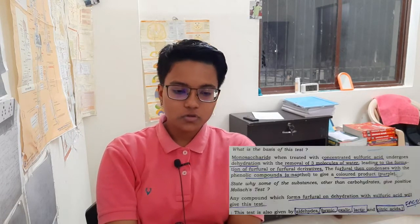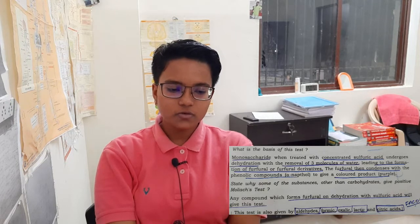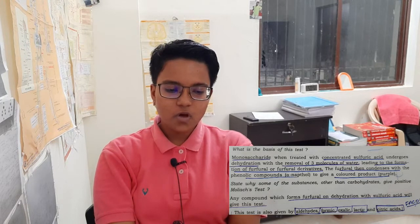Our first question is: what is the basis of the Molisch test? Monosaccharides, when treated with concentrated sulfuric acid, undergo dehydration with the removal of three molecules of water, leading to formation of furfural or furfural derivatives. The furfural then condenses with the phenolic compound alpha-naphthol to give a color product which is purple in color.